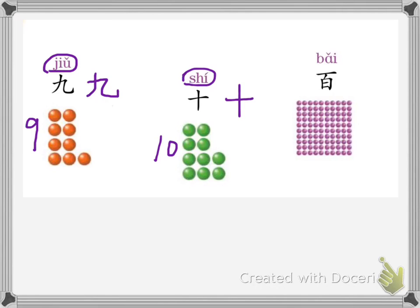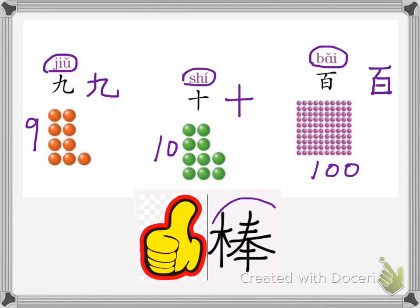This is number 100. It sounds like this. It writes like this. This is the first stroke, this is the second stroke, this is the third stroke, this is the fourth stroke, this is the fifth stroke, this is the sixth stroke. You are awesome!